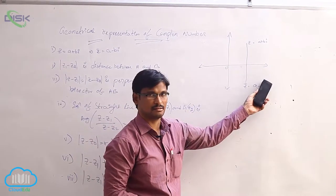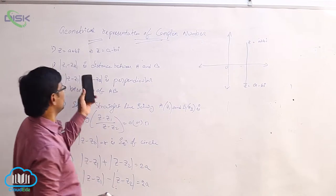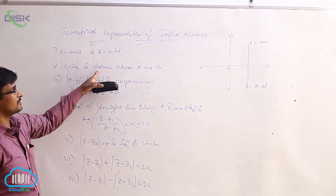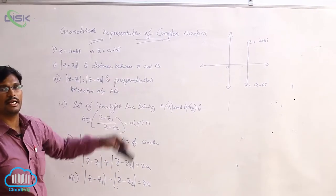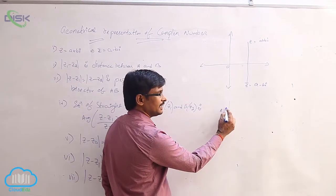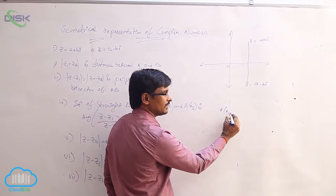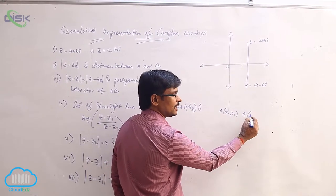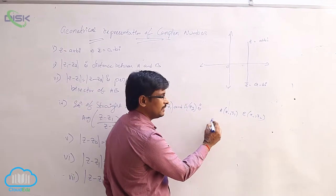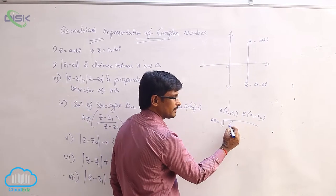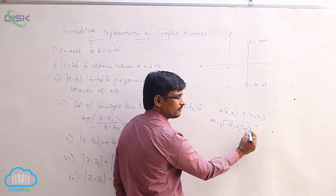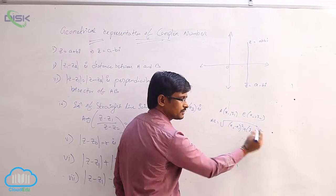Now, mod(z1 minus z2) is the distance between two points A and B. In two dimensions, if A is (x1, y1) and B is (x2, y2), then the distance between A and B is the square root of (x2 minus x1) squared plus (y2 minus y1) squared.